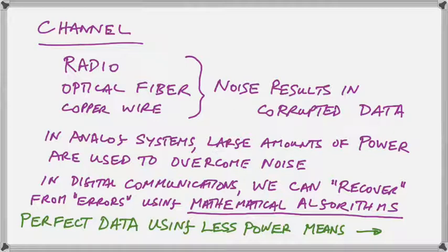Analog systems, just by comparison to the digital systems we're learning about, require large amounts of power to overcome this noise. A powerful transmitter so that the noise doesn't render the transmission useless. But in digital communications, we can recover from errors that may have corrupted the information using mathematical algorithms, which we're going to learn about in this course.